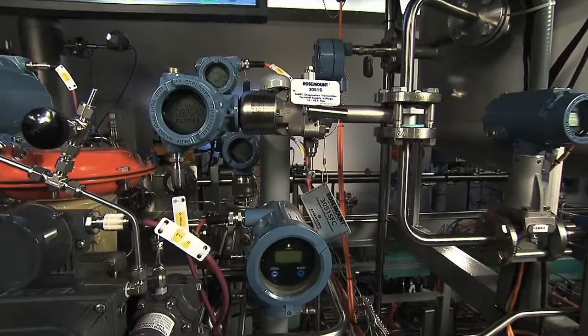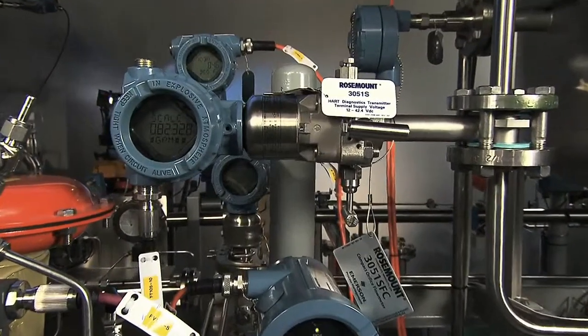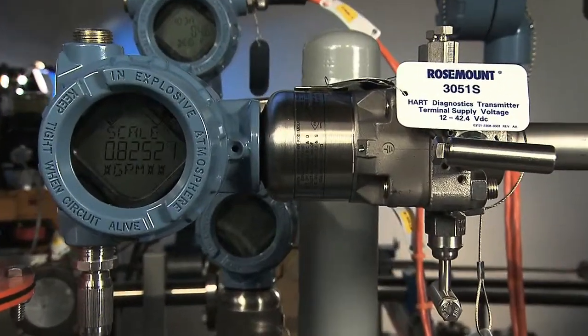Today we're going to demonstrate the power of statistical process monitoring technology using the Rosemount 3051S pressure transmitter. The 3051S is a highly accurate device that's used to measure pressure, DP level, and DP flow.